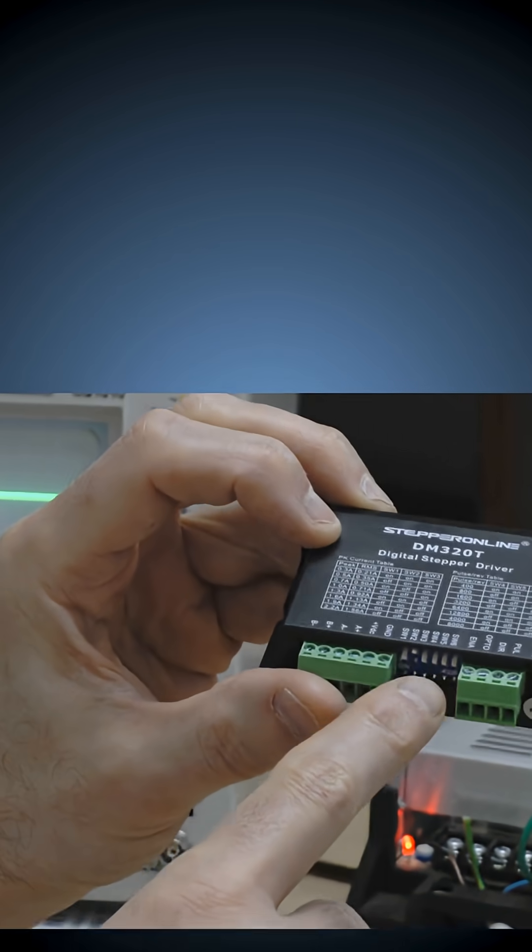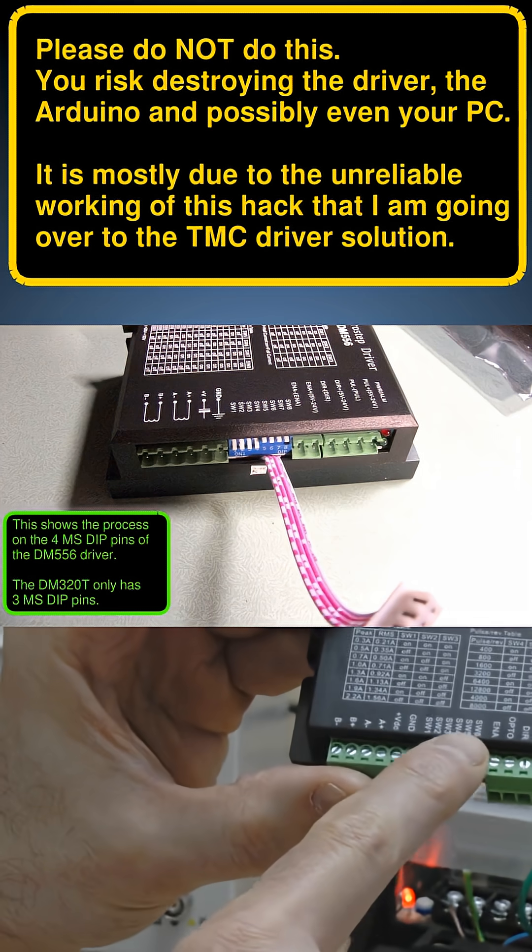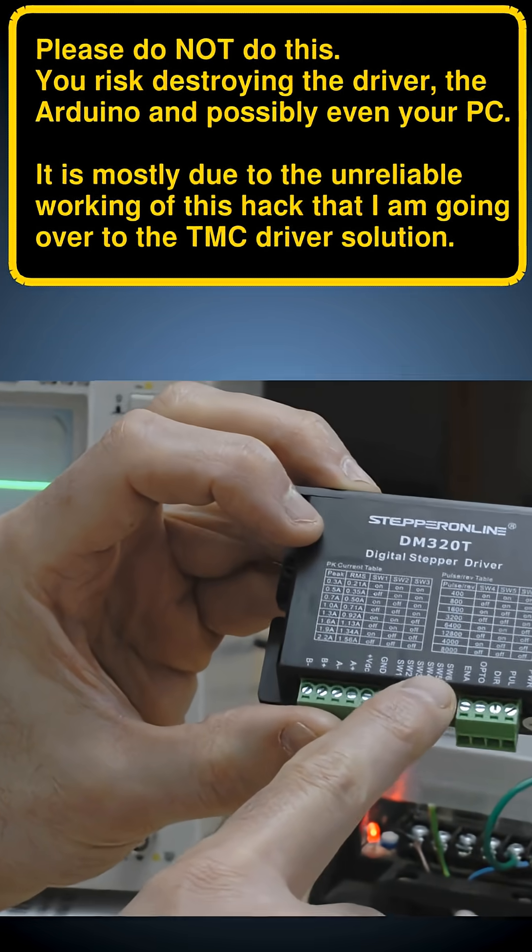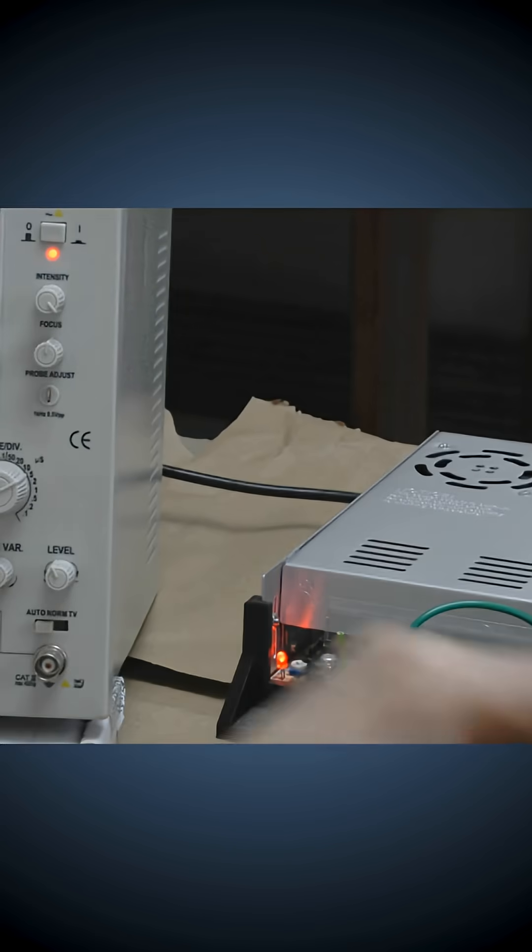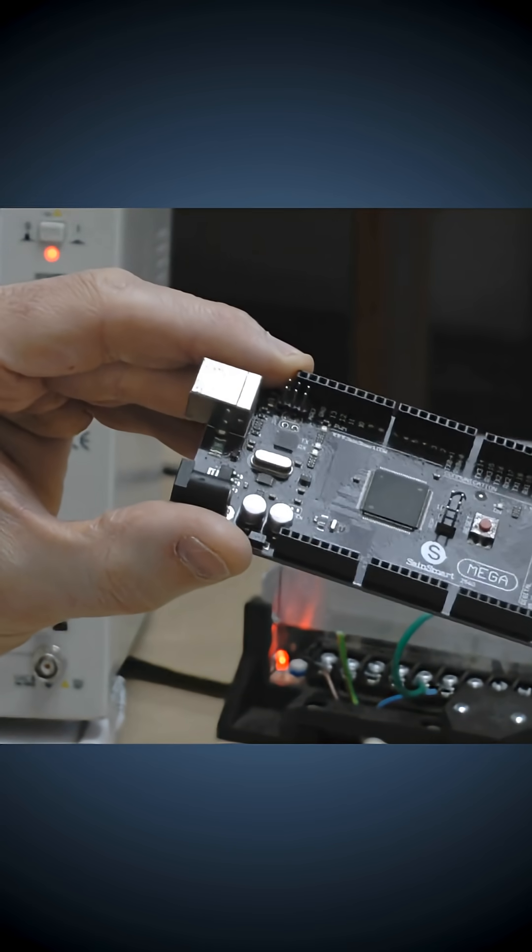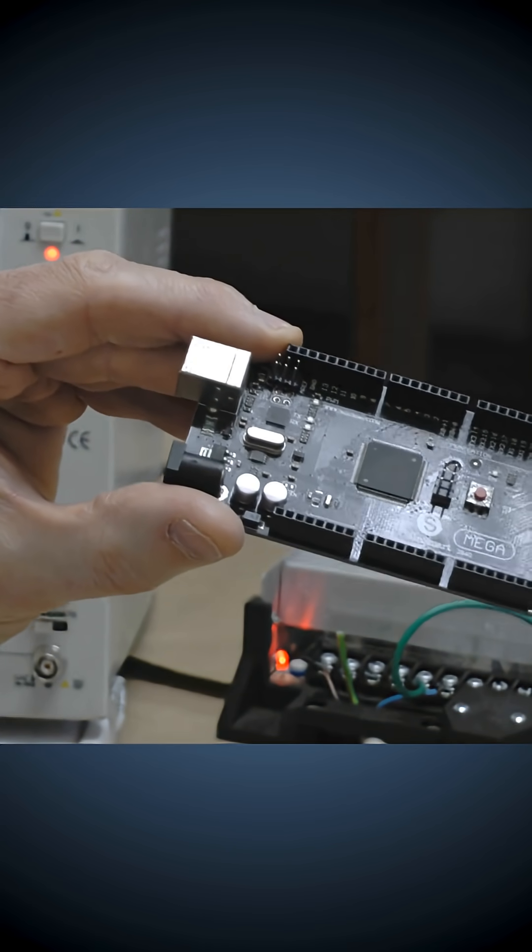So what I did was I took a ribbon cable and I hardwired these three DIP switches to externalize them so I could connect them to the Arduino pins and then switch them programmatically.